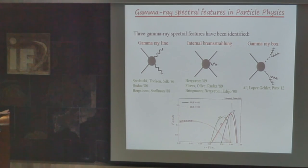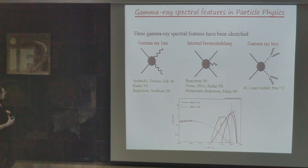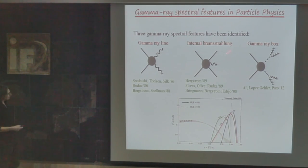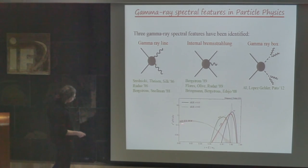Since there are many particle physicists in this audience, it is appropriate to discuss the implications of these searches for particle physics models. From a particle physics perspective, there are three possible sharp spectral features identified in concrete models: gamma ray lines, internal Bremsstrahlung, and gamma ray boxes. These give spectra very different from the smooth spectrum expected from annihilations into quarks or W bosons.